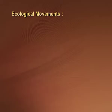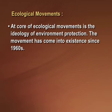Social movements are of various types. Having discussed theories, types of movements, and stages within the life of a social movement, we will now discuss some examples. Let us begin with ecological movements. At the core of ecological movements is the ideology of protection of the environment. The movement has formally existed since the 1960s, although consciousness towards environmental protection was always present. The formal movement came into existence since the 1960s only.